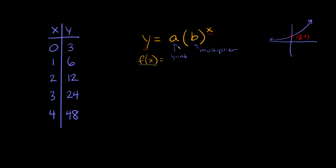So with that in mind, if we're trying to figure out what a is — the y-intercept — you can just come to your table and look to see where your x value is equal to zero. It'd be right here at the very top. What's paired with the zero? Well it's a three. So in this case a would be equal to three. We can say that this point from the table is at the point zero comma three. So in this example a is going to be equal to three.